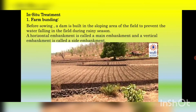The first treatment is in-situ treatment, and the first method within it is farmbunding. Before sowing, a dam is built in the sloping area of a field to prevent water accumulating during the rain season. A horizontal embankment is called a main embankment and a vertical embankment is called a side embankment. When it is raining, water is pumped out of the field with a large hose to keep the dam from bursting and to prevent soil erosion.